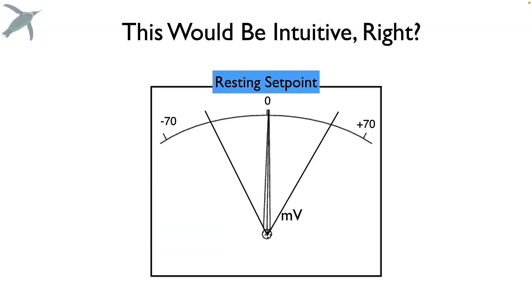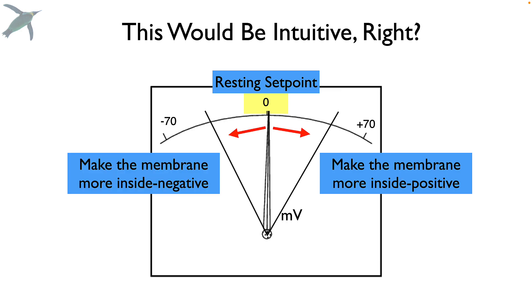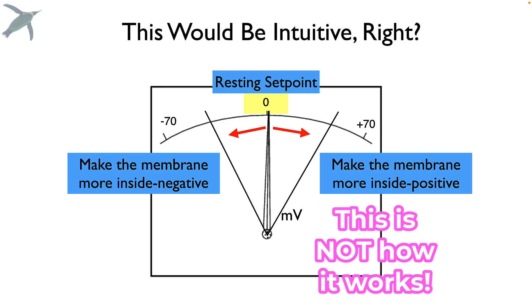Now, this is not how it works, but this is how students wish it would work. Resting setpoint, or the resting membrane voltage, would be zero. And you have two options. You can either make the membrane more inside positive, right? You get a positive number. Or you can make the membrane more inside negative with a negative number. That's not how it actually works.